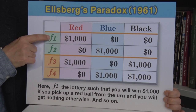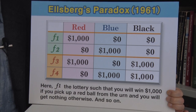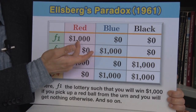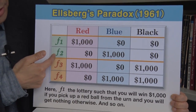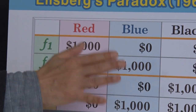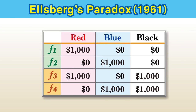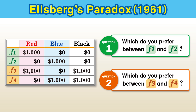The first alternative is named F1. F1 says: if you pick up a ball without looking inside, and if you pick up a red ball, then you get $1,000; otherwise, you get nothing. Similarly, there are alternatives F2, F3, and F4. Ellsberg asked people which between F1 and F2 is better for them, and second, which they prefer between F3 and F4.